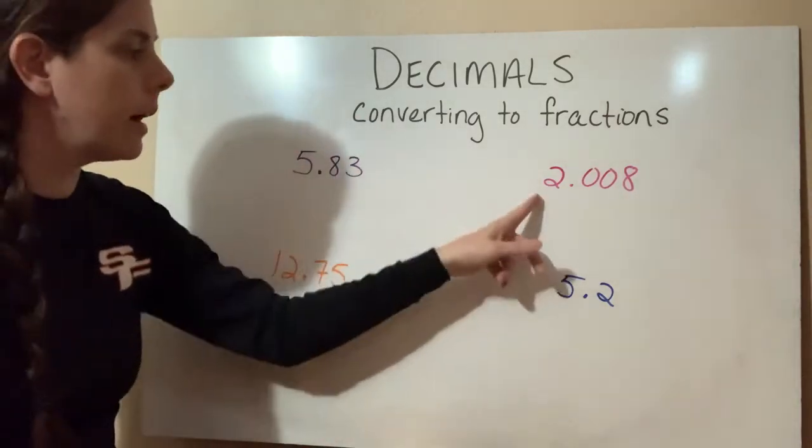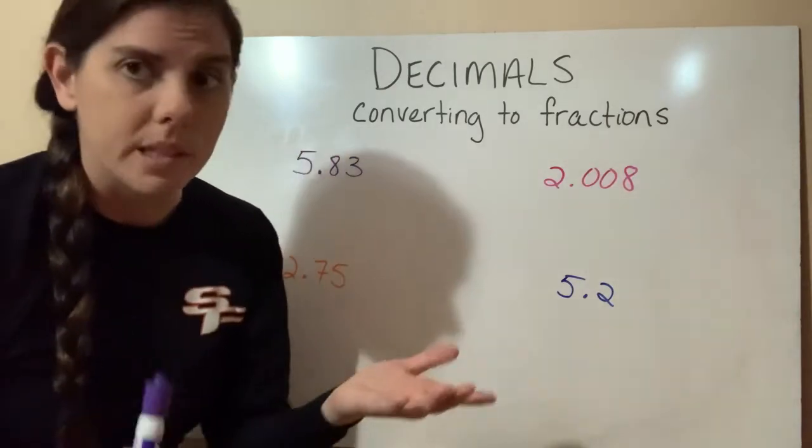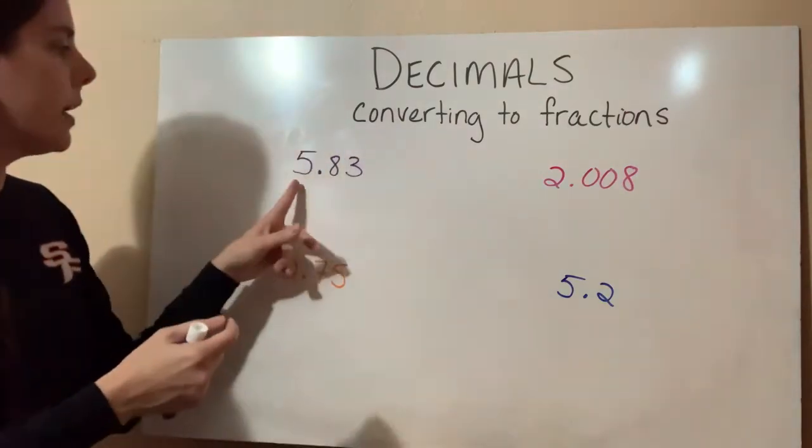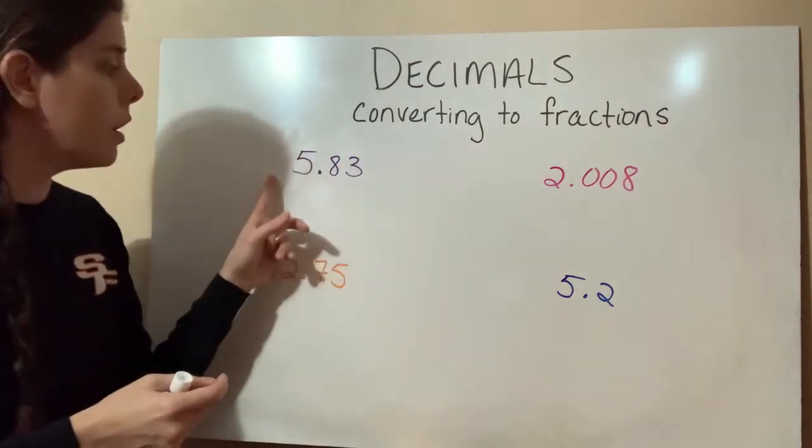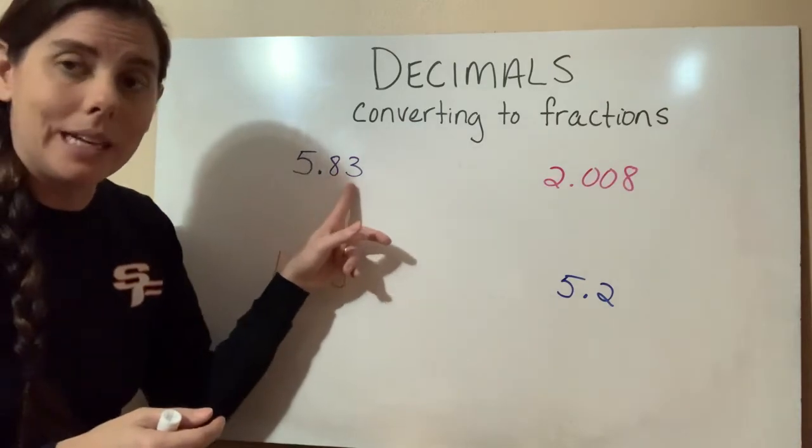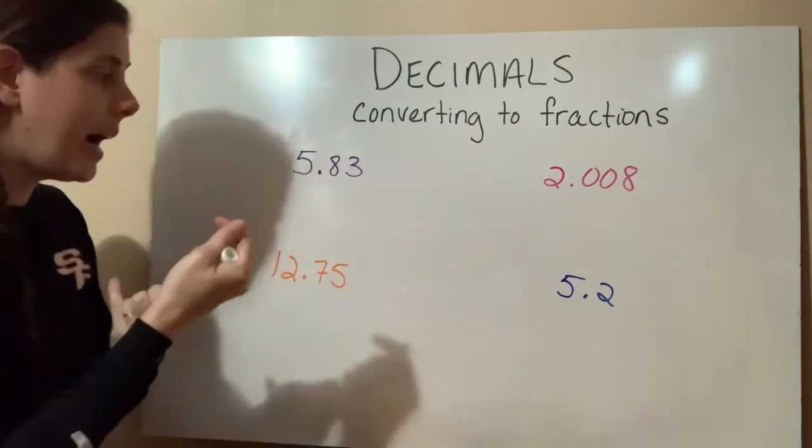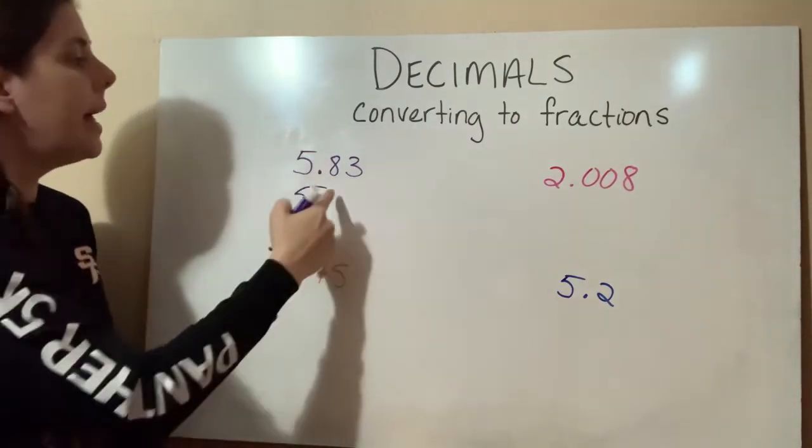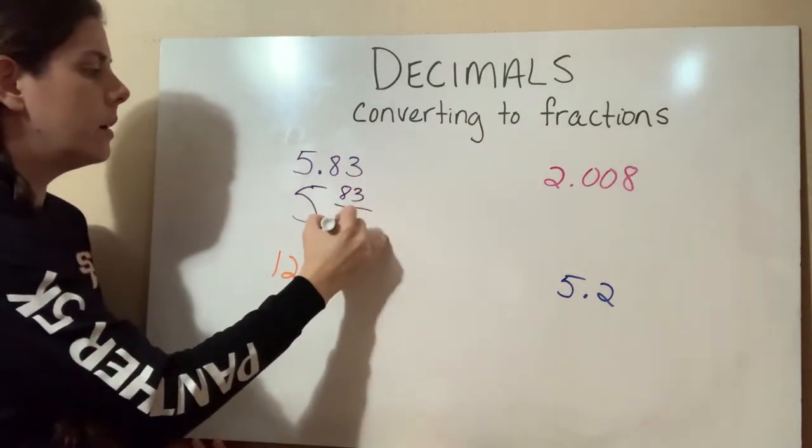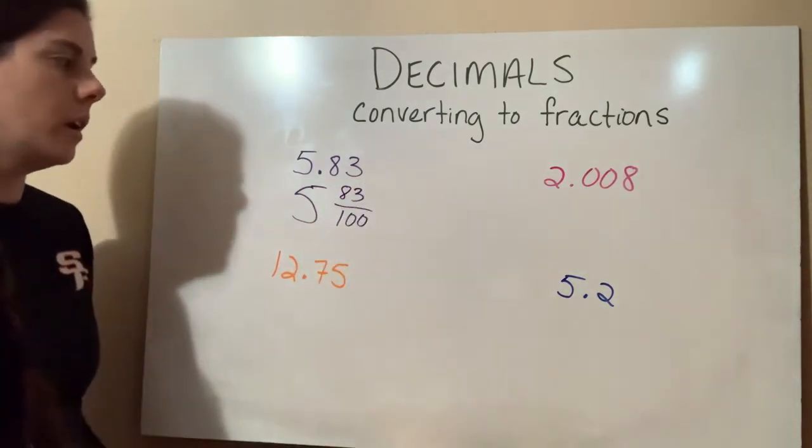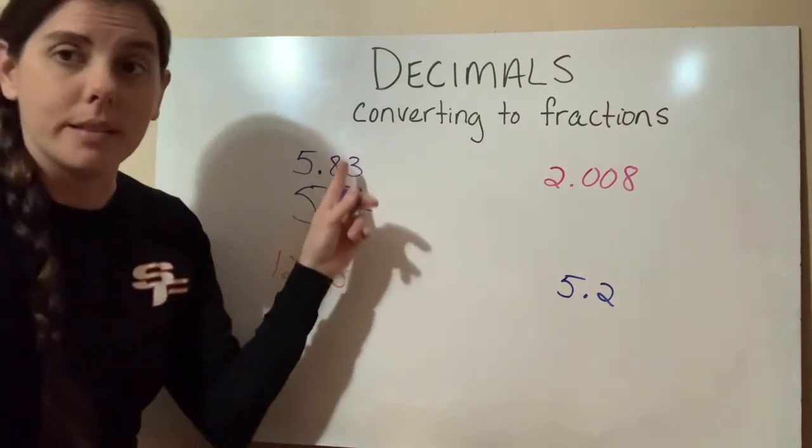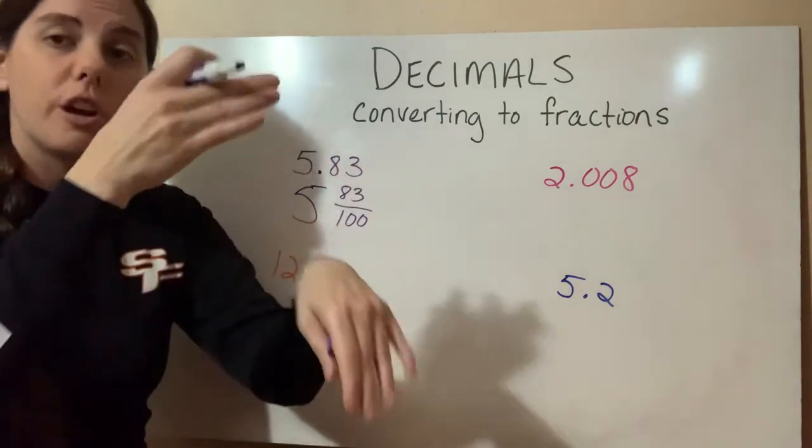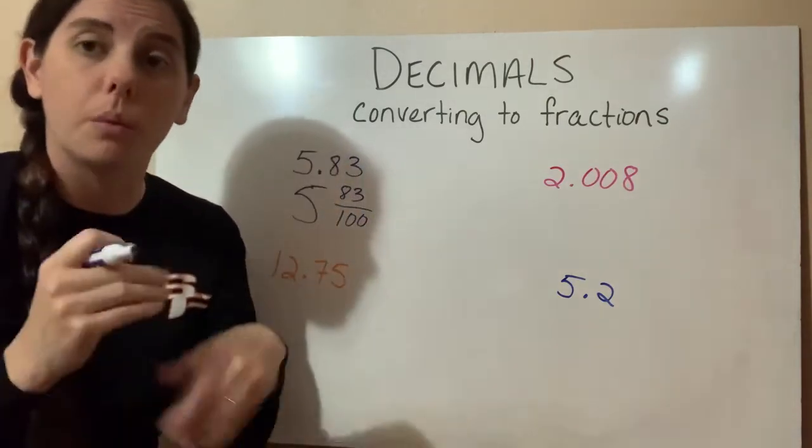So each of these, because we do have whole numbers here, we're going to write them as a mixed number just for the purposes of this video. When I look at 5.83 or 5 and 83 hundredths, 5 is going to be our whole number in a mixed number. And then 83 hundredths. So learning how to say these using their decimal place values is going to really help you convert these decimals into fractions, which is a really important concept.